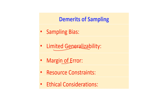The margin of error can be reduced by increasing the sample size, but it cannot be eliminated entirely with sampling. If we take the census approach, we can eliminate the margin of error. Another concern is resource constraints: although sampling helps us use resources efficiently, if the sample size is large it still requires resources for formulating the sample frame, collecting and analyzing data, and even requires expert-level input to ensure representativeness of the population.